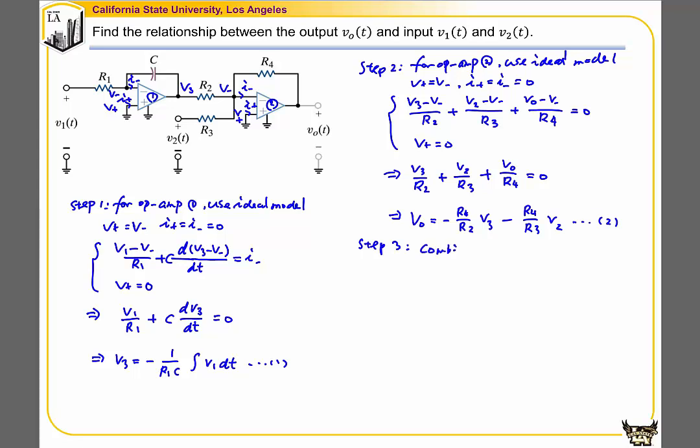Step 3: combining equations 1 and 2. We have V0 = -R4 times... negative times negative becomes positive, so V0 = R4/(R1·R2·C) · ∫V1 dt - R4/R3 · V2.